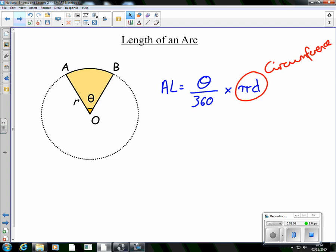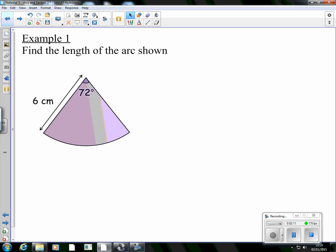We'll do two examples and then I'll leave you a couple as well. Very similar example to last time, but this time we're not looking for the sector, we're looking for the length of the arc. Arc length equals the fraction that I have multiplied by pi d.